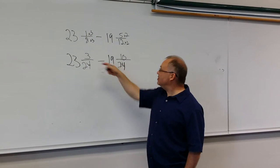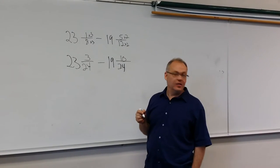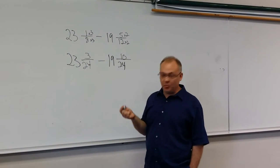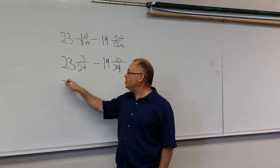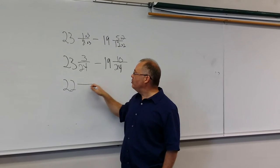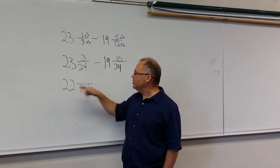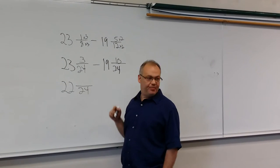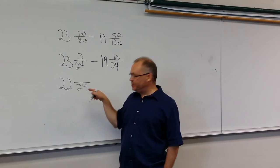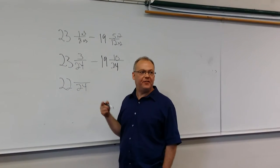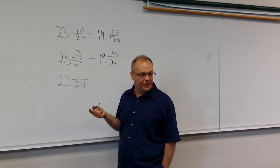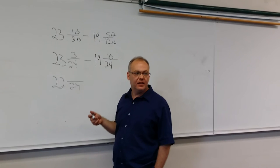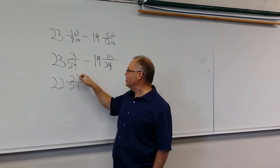Now we can't subtract 10 from 3. So we need to borrow the whole from the 23, which now makes it 22. Now we're in base 24. So that means every whole that we borrow makes 22. One whole is 24 out of 24 that we add to the 3 out of 24 to now make 27 out of 24.